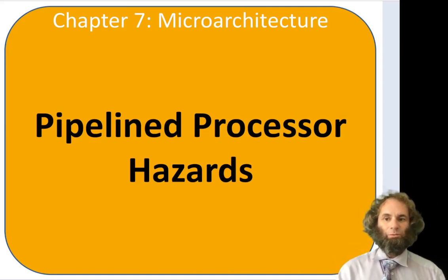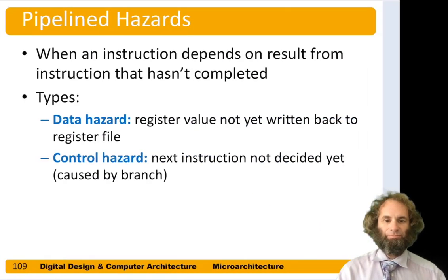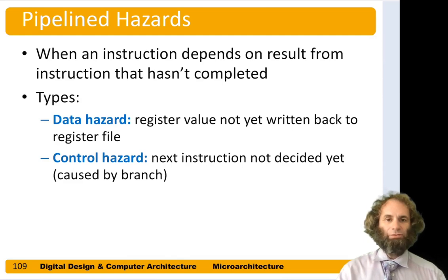Hello! In this video we'll look at handling hazards in the pipeline processor. A pipeline hazard happens when an instruction depends on the results from a previous instruction that hasn't yet completed. There are two types of hazards: a data hazard, where we need to use a register value that hasn't yet been written back to the register file, and a control hazard, which occurs when you haven't decided what instruction to do next — for example, when there's a branch.